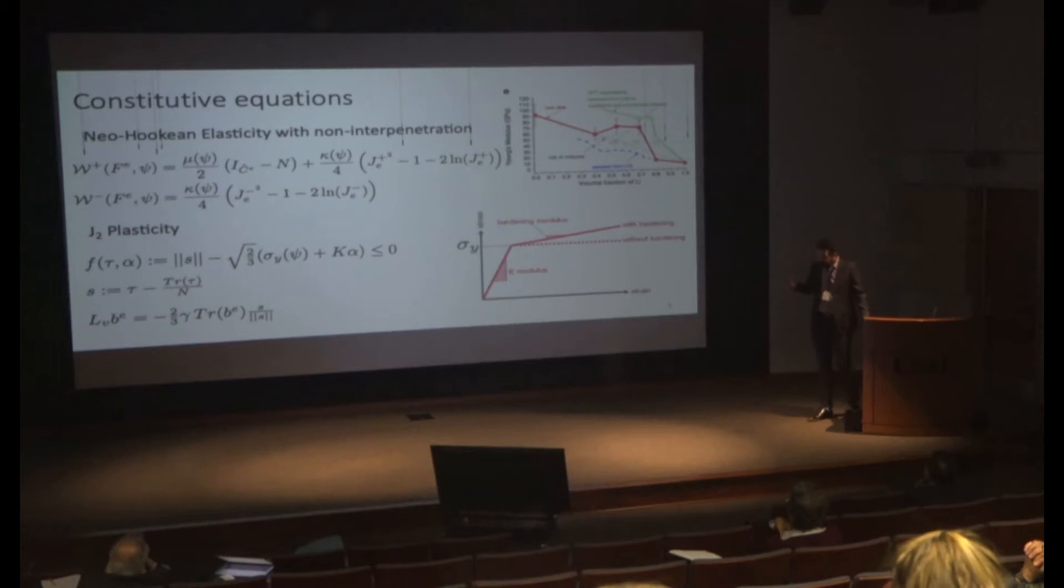Because I have this phase change, my material properties are changing. Amorphous silicon is a lot more compliant by a factor of 10 to 4, depending who you ask, than crystalline silicon or germanium. So I need my material properties to depend on that phase change. Then I have J2 plasticity.